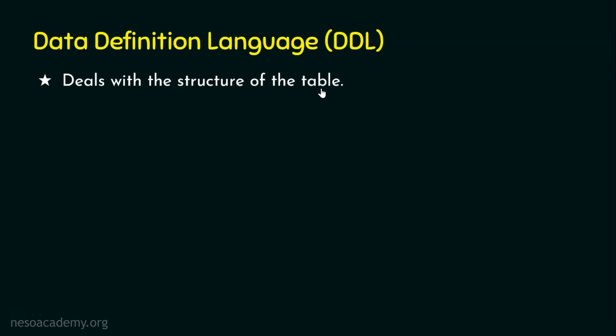In contrast, if I am just going to change the data of a row — say I want to modify the salary of a person — when I make modifications at the row level I am working on the data portion, so that is DML, the Data Manipulation Language, not DDL. Anything that deals with the structure of the table is DDL, and DDL commands are auto-committed, meaning we do not need to explicitly issue a commit command to save the modifications.